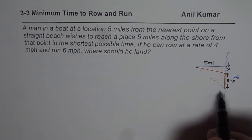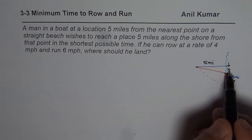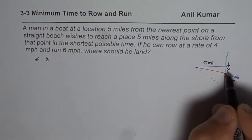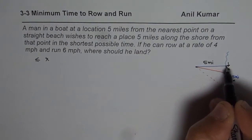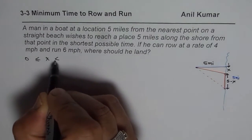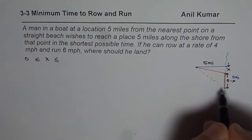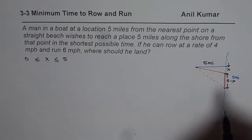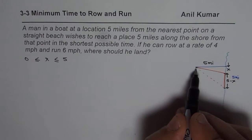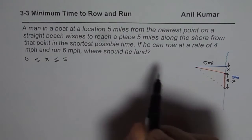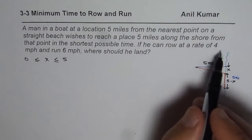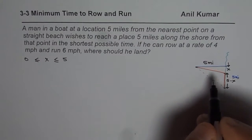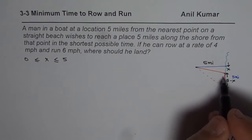Now in this situation, what could be the value of x? The value of x could be either 0, meaning the person lands just right there, or it could be 5, meaning the person goes diagonally all the way. So these are the boundary conditions for x. During rowing, the speed is 4 miles per hour, and the running speed is 6 miles per hour.